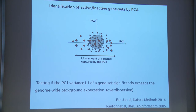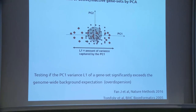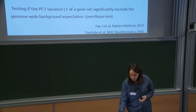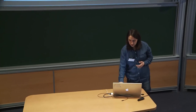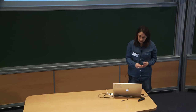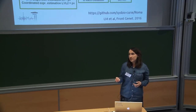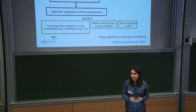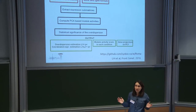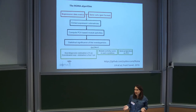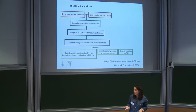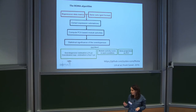We consider gene sets that show excessive variance to be particularly active or inactive in our conditions. We define background expectations and identify these active or inactive sets. All of this is implemented computationally to run automatically for many pathways. If we have no prior knowledge, we can test a complete database of pathways that are now available.